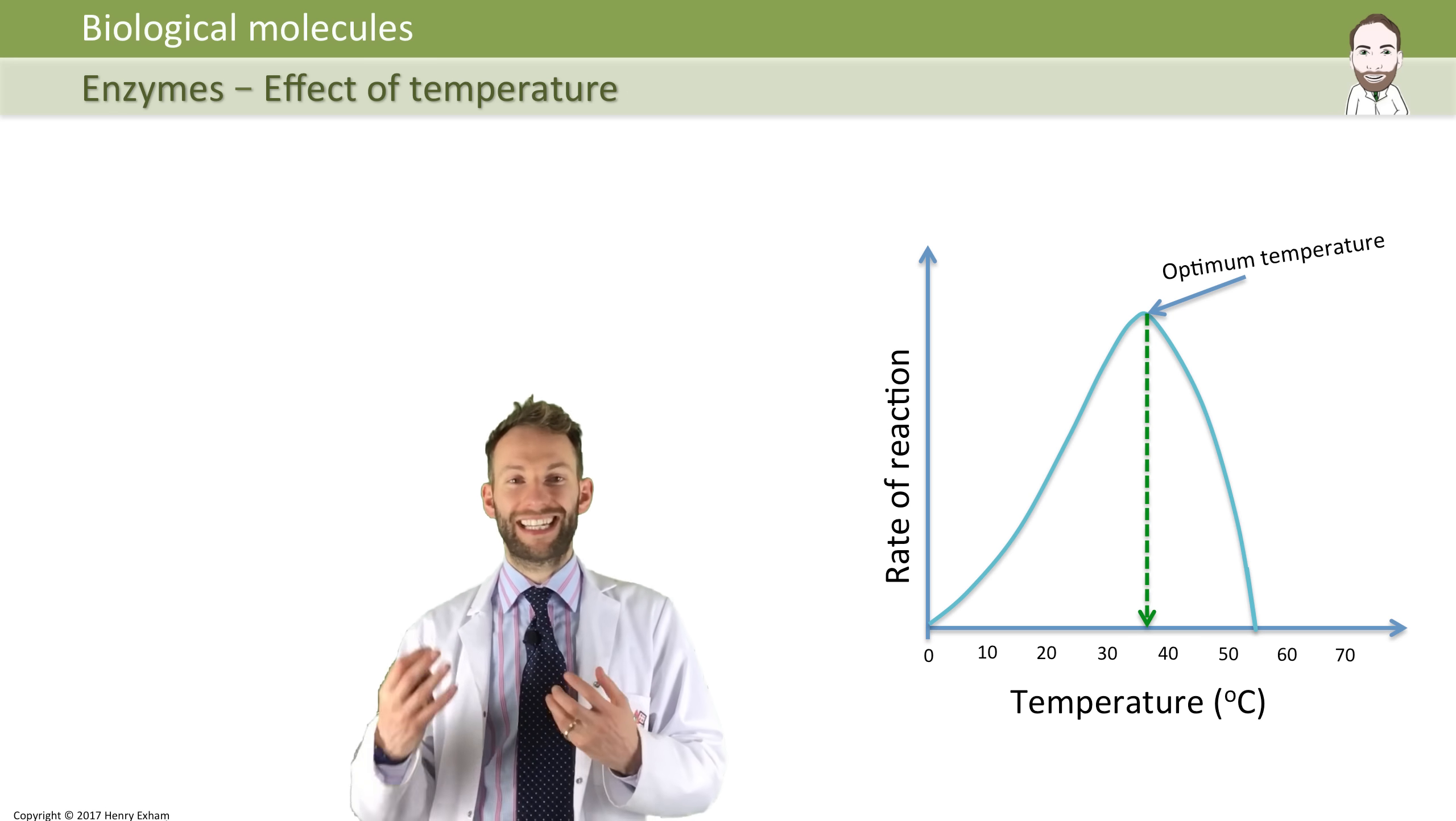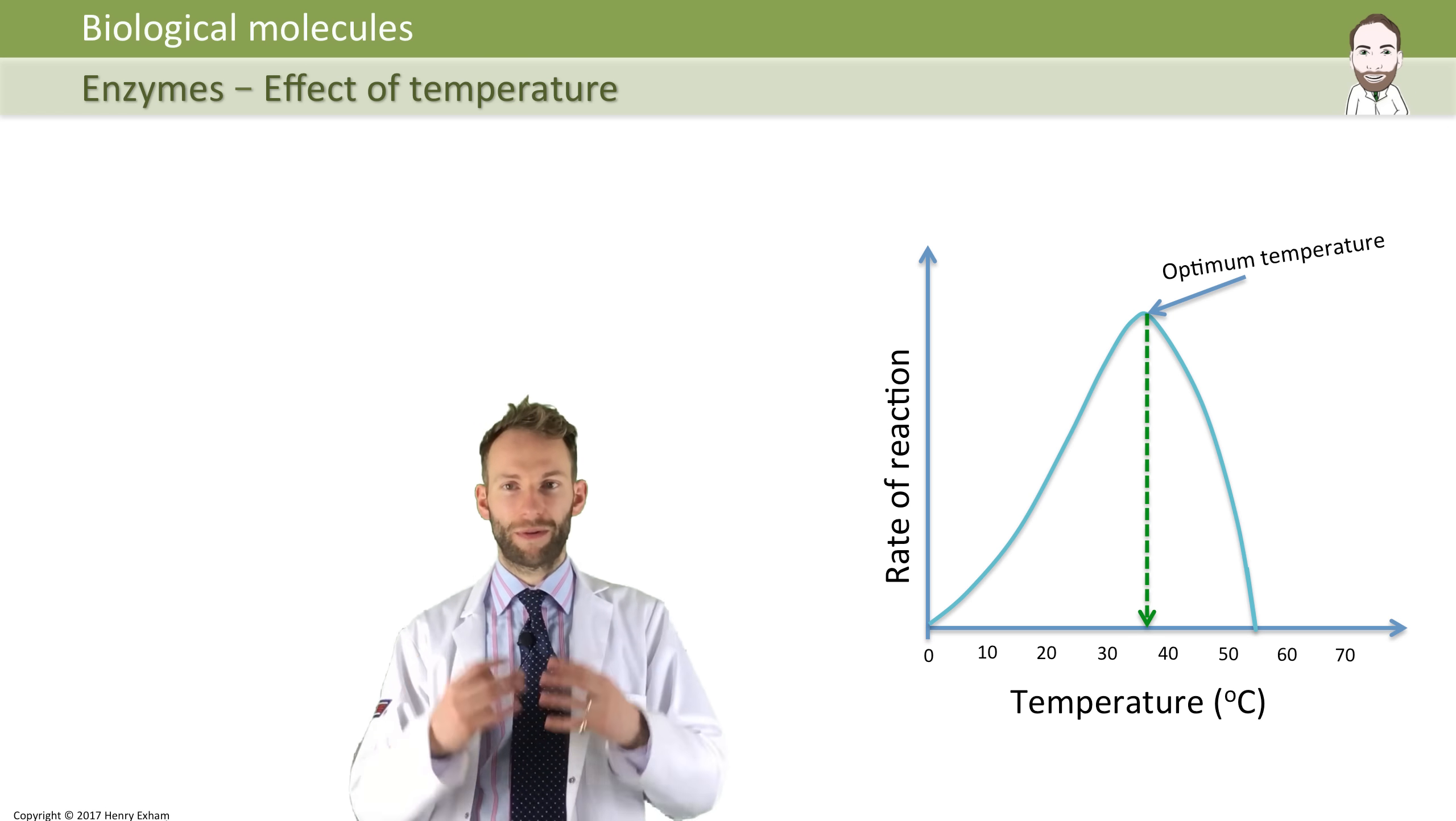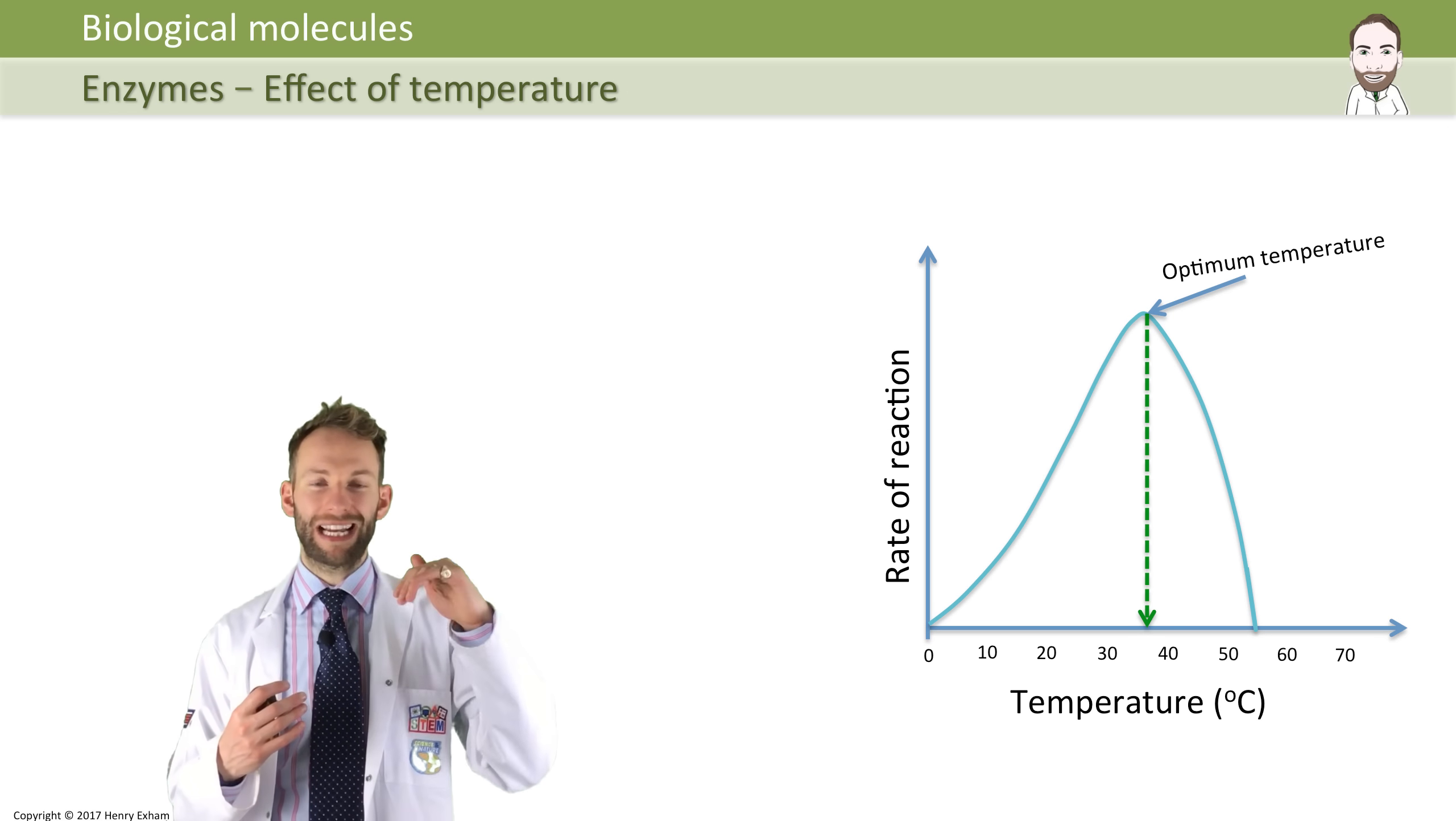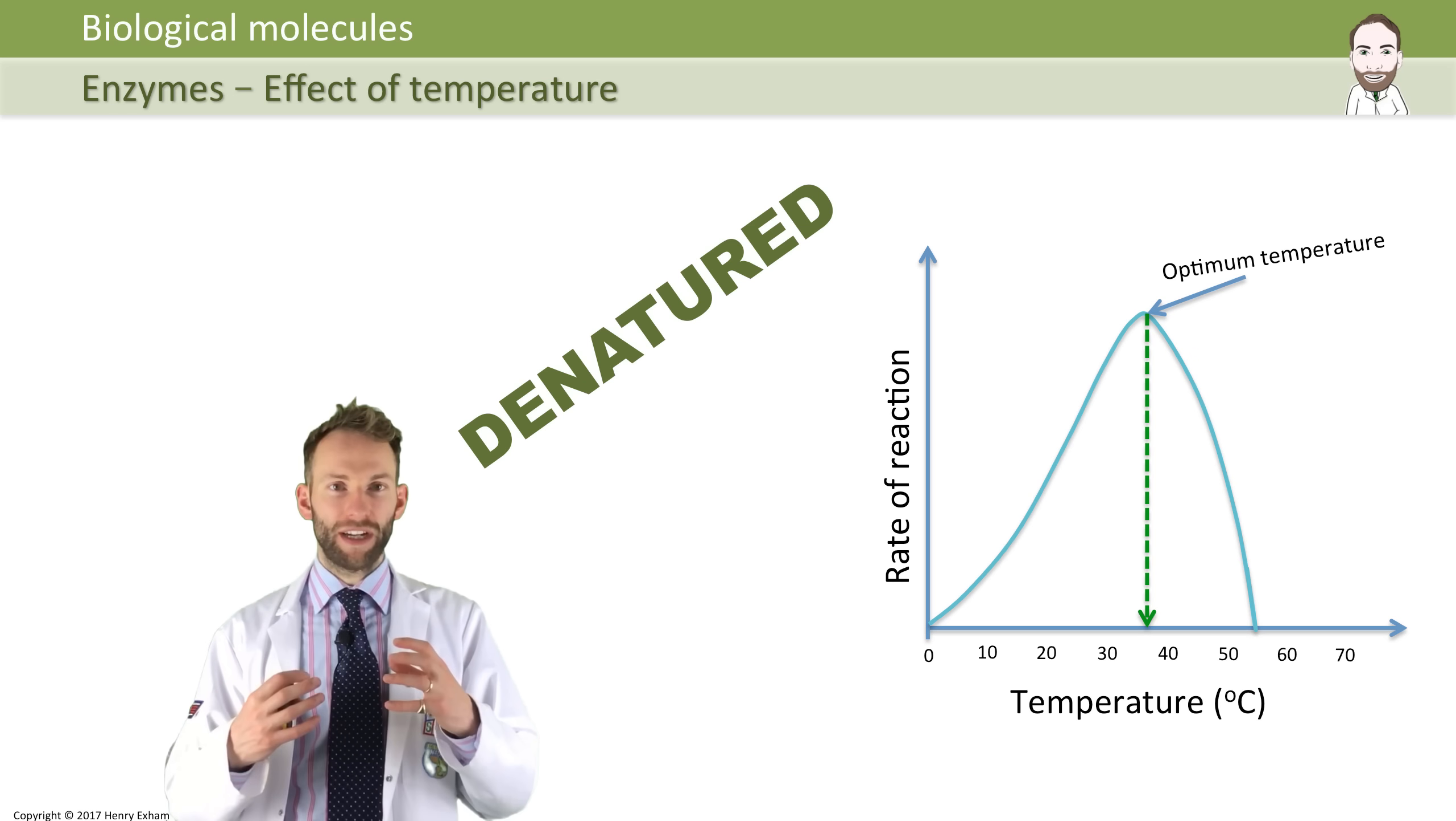However, there becomes a point where it's working at its optimum rate, which in this case is probably around 37 degrees Celsius, as shown by this graph here. After that though, the rate suddenly very quickly decreases. This is because the enzyme has become denatured. If you heat up the enzyme too much, it just changes shape and loses all its shape.